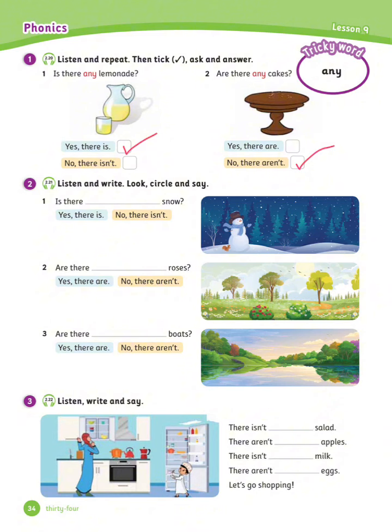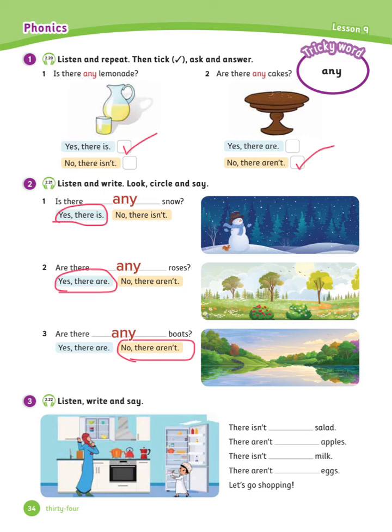Exercise number 2: Listen and write, look, circle, and say. Number 1: Is there any snow? Yes, there is. Number 2: Are there any roses? Yes, there are. Number 3: Are there any boats? No, there aren't.